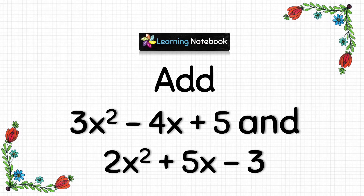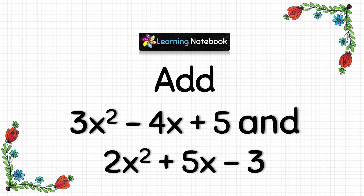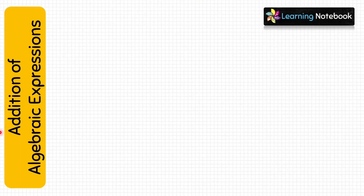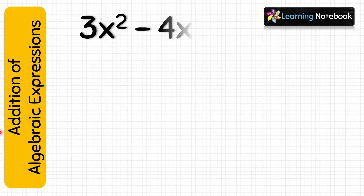Now we have done the preparation, so let's add the two algebraic expressions. We will add 3x square minus 4x plus 5 and 2x square plus 5x minus 3 with the help of this activity. Let's represent the first expression 3x square minus 4x plus 5.